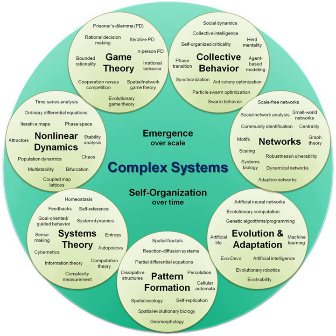Systems ecology is an interdisciplinary field of ecology, a subset of earth system science, that takes a holistic approach to the study of ecological systems, especially ecosystems. Systems ecology can be seen as an application of general systems theory to ecology. Central to the systems ecology approach is the idea that an ecosystem is a complex system exhibiting emergent properties. Systems ecology focuses on interactions and transactions within and between biological and ecological systems, and is especially concerned with the way the functioning of ecosystems can be influenced by human interventions.